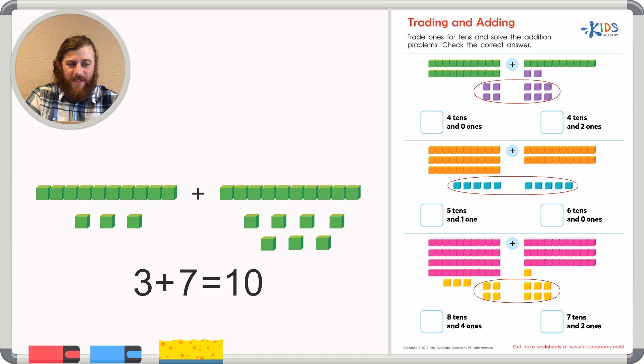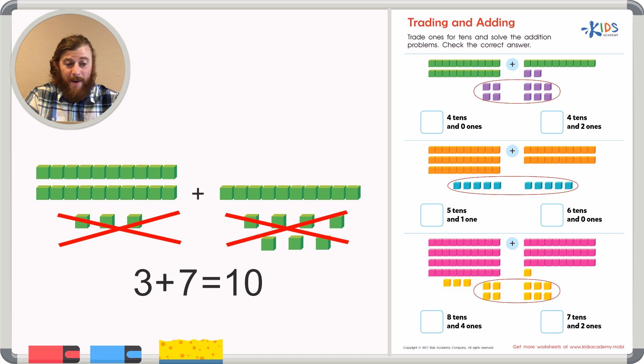I could trade these cubes for one 10. Then I have two longs or tens on this side plus one long or 10 on this side, giving me a total of two plus one equals three, three longs.